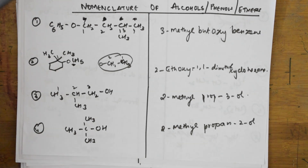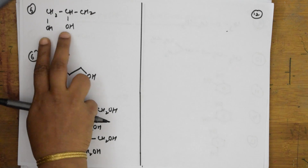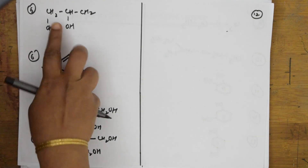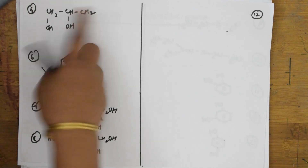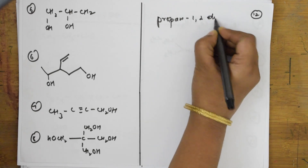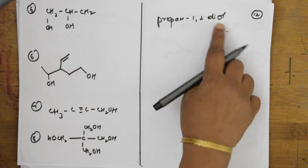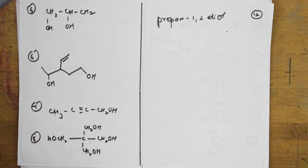I hope this is clear — I'm going slowly so please try to understand the concept. Once you understand it, you can name any type of compound. Now when two alcoholic functional groups are present, the parent chain is one, two, three — propane — giving us propane-1,2-diol. 'Di' means two, and '-ol' means alcohol group.